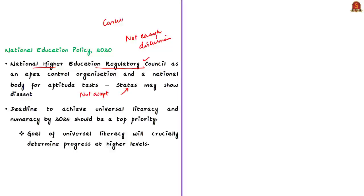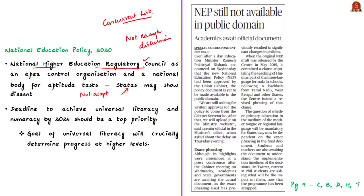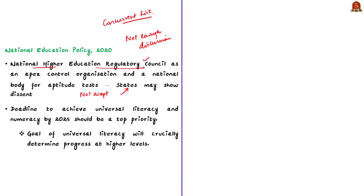States are complaining that there was not enough discussion before bringing up this policy at the parliamentary level. Since education comes under the Concurrent List, both houses should have discussed it, particularly the Council of States — Rajya Sabha. Also noted is that the NEP document is still not available in the public domain, as the Ministry of Education is waiting for written approval from the Cabinet Secretariat following the Union Cabinet's recent approval. One editorial notes that among many imperatives, the deadline to achieve universal literacy and numeracy by 2025 should be a top priority.